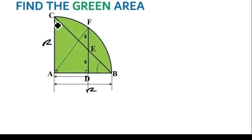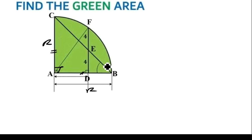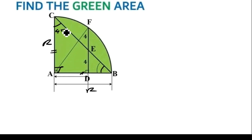Triangle ABC is a right angle triangle and the length AC is the radius, meaning it is equal to the length AB, which is also a radius. So if the angle at vertex A is 90 degrees, then the angles at vertex B and vertex C are equal because both are subtended by the radius R. So the remaining 90 degrees is shared equally into 45 degrees and 45 degrees.